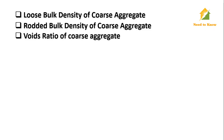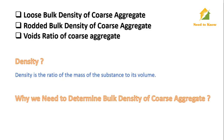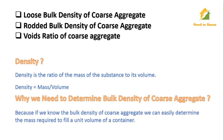The question is: what is density and why do we need to determine bulk density of coarse aggregate? Density is the ratio of the mass of a substance to its volume — mass per unit volume. We need to determine the bulk density of coarse aggregate because if we know it, we can easily determine the mass required to fill a unit volume of a container. This is very important in concrete mix design.